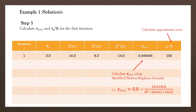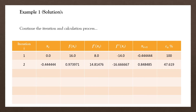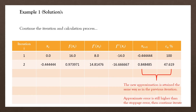We then apply the modified Newton-Raphson formula, substituting all the values from the previous columns, and we get xi plus 1 equal to minus 0.4444. The approximate error is still large, so we proceed to the second iteration using the new approximation as the new initial value. In the second iteration, the approximate error is 47.619 percent, which is still larger than the stoppage error, so we continue.